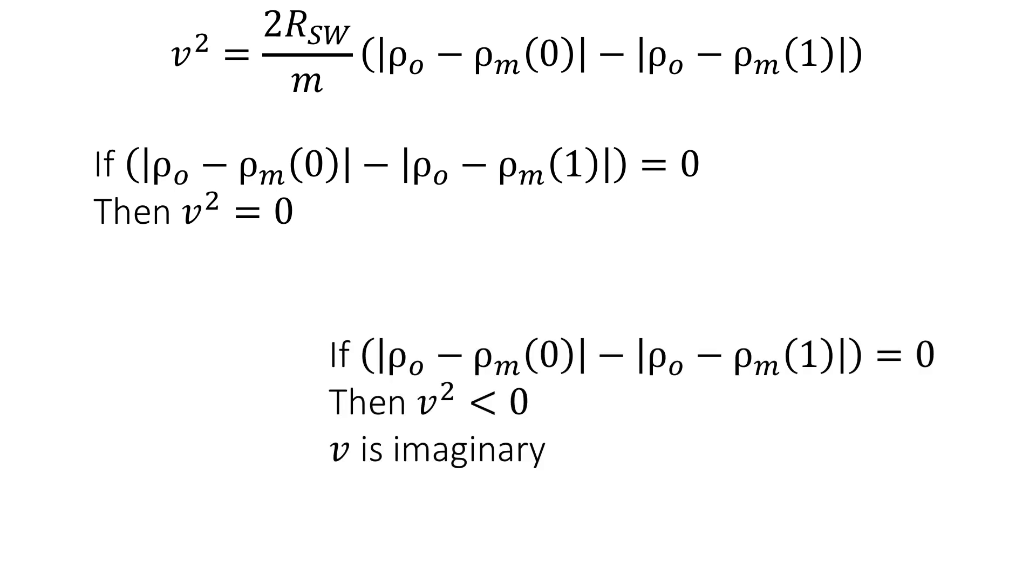If the initial density difference is greater than the final density difference, then the square of the velocity is a negative number, which means that the velocity is in the imaginary plane, and this is unphysical, so this checks out.